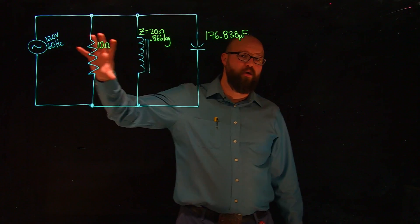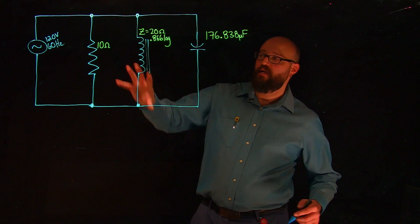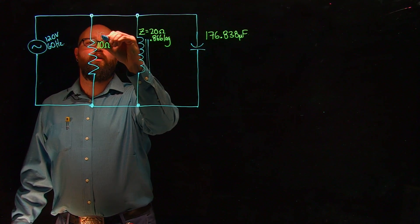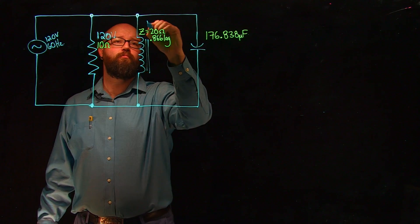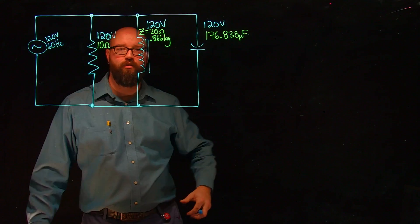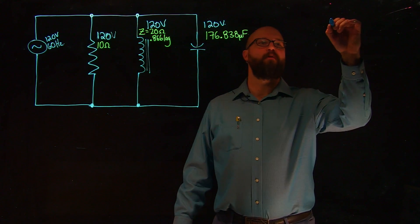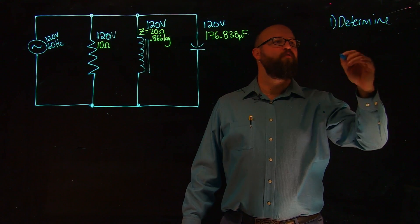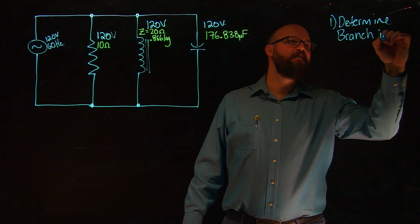I'm going to break it down into three simple steps, and hopefully at the end we end up with a line current and a respective phase angle. So first thing: we are dealing with a parallel circuit, so we know that each one of these loads connected into this circuit has 120 volts across each one. The first thing we need to determine in order to move forward is what each branch impedance is.